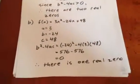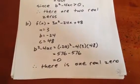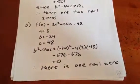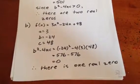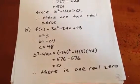For the next question, we have f(x) = 3x² - 24x + 48. That means a = 3, b = -24, c = 48, and b² - 4ac equals zero. So there is one real zero.